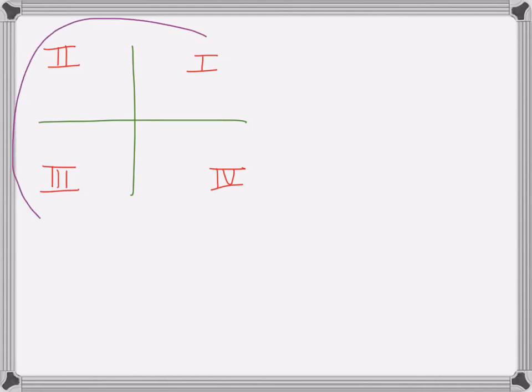I start at one, two, three, four. This is the direction I go normally. And that is how we're going to start graphing these angles. So let's say I give you the example, I want to graph 240 degrees.